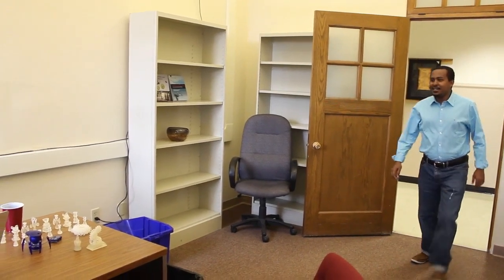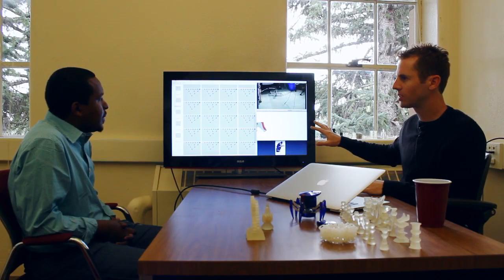My name is Jeff Klune, and I am a professor here at the University of Wyoming. The focus of our lab is to evolve artificially intelligent robots. And the research we focus on is why intelligence evolved in nature.